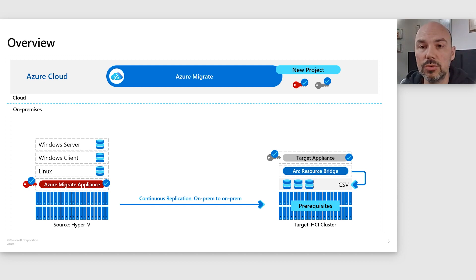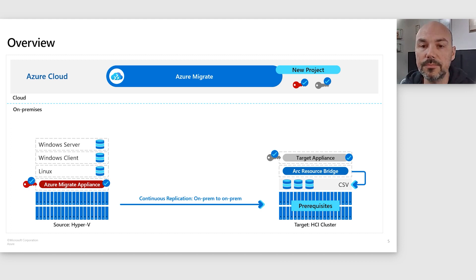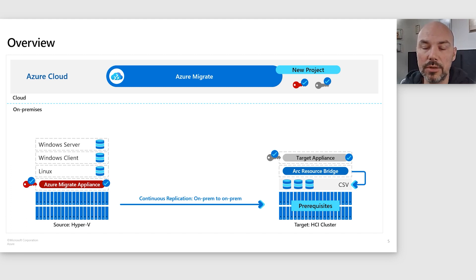The disks from the VMs you selected are replicated to the storage location you provided during prerequisites. Once the initial replication is done, we keep them in sync with delta replications every hour until you decide to migrate. When you're ready to migrate, we tell the resource bridge to create the servers from the synced disks, pause replication, do one final delta sync to ensure everything is up to date, and then complete the migration.